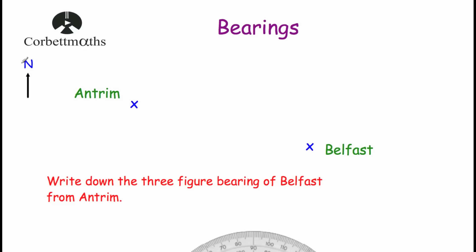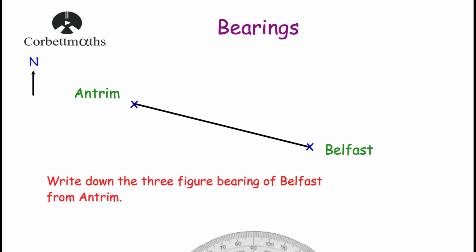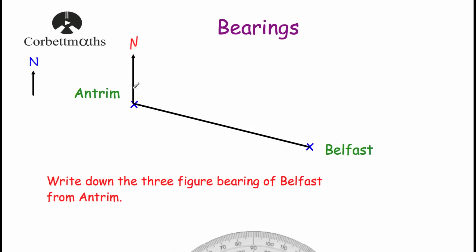So our first question, here we've got a diagram with our north line — north is going up. We've got Antrim and Belfast, showing their locations with little x's, and we've been asked to write down the three-figure bearing of Belfast from Antrim. When doing a question where we've been asked to measure the bearing of one position from another, the first thing I do is join up the two points with a ruler. Then the next step is to find where we're starting from. The question says to find the bearing of Belfast from Antrim, so we're starting from Antrim. Our next step is to draw a north line at Antrim, and then measure the angle clockwise from north to the line drawn.